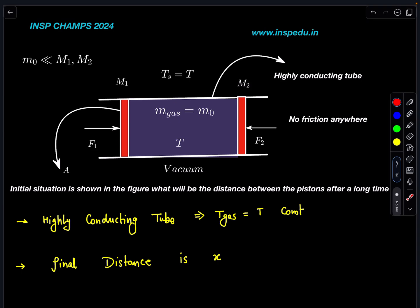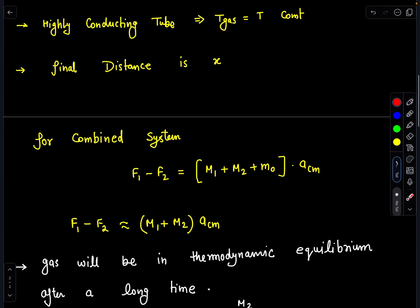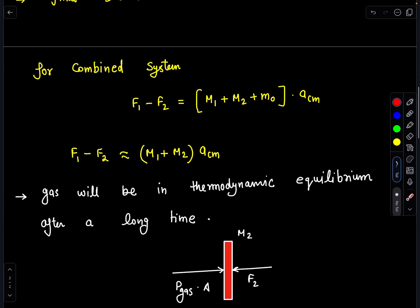Finally, when this distance comes to some steady state value, this entire system of pistons and gas will behave like one single block, and there will not be any relative separation between these two. In that situation, gas will attain a final thermodynamic equilibrium.